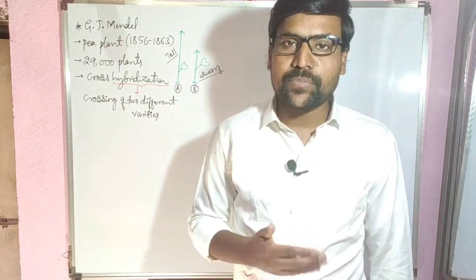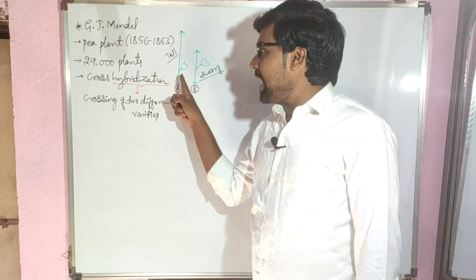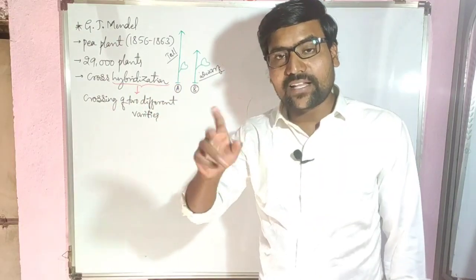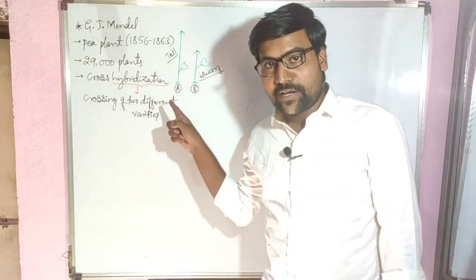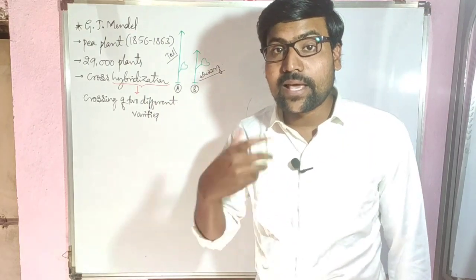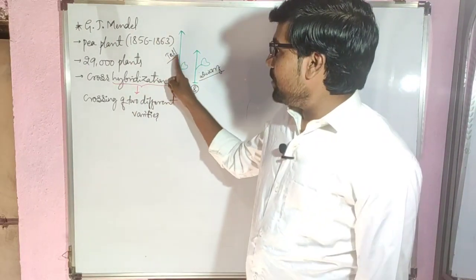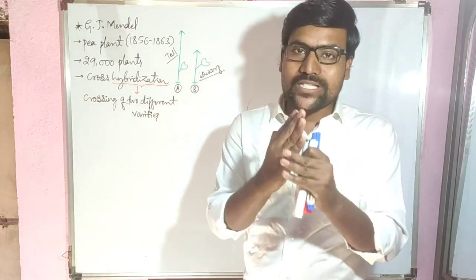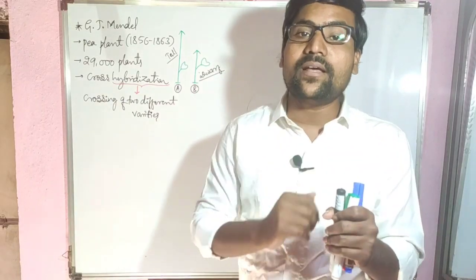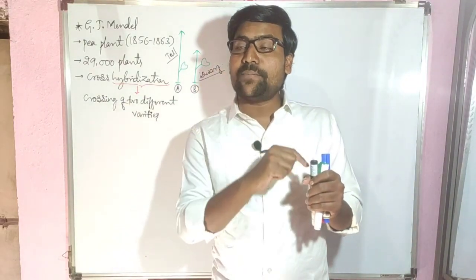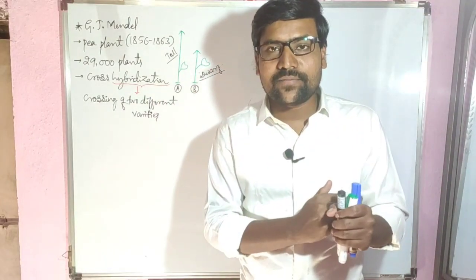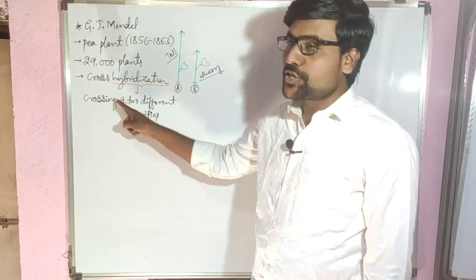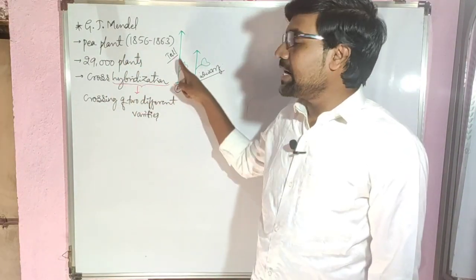This is one variety and that is another variety. If we cross those two varieties, we are going to get the next plant, which is called a hybrid — because both plants are different in character. The process that produces that hybrid plant is called hybridization.